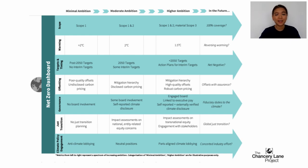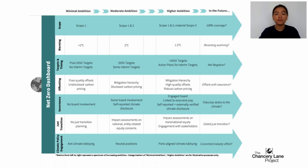One last point: a minority of clauses won't relate to net zero at all, and instead may speak to other elements like biodiversity, environmental protection or climate change resilience. For example, a clause around food supply chains and risks from climate change-induced weather events would speak to resilience. Thank you so much for listening.